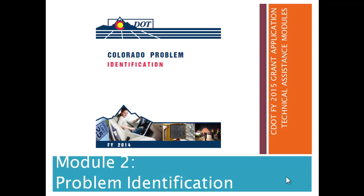We hope that the information in this webinar will help you think through the strategy behind what problems you identify in your county, how to do it, and how to pull data from the problem identification report. To start this module, we're going to use a hypothetical county named Fake County, and we're going to pretend that we work for a Motor Vehicle Safety Coalition in Fake County.